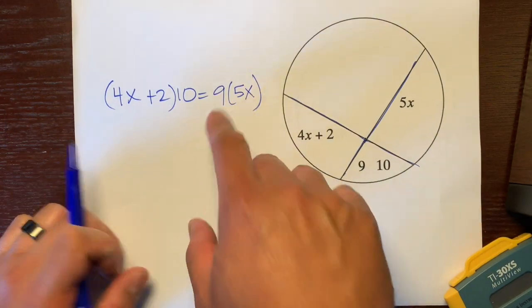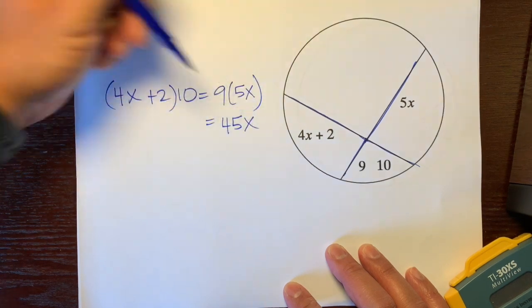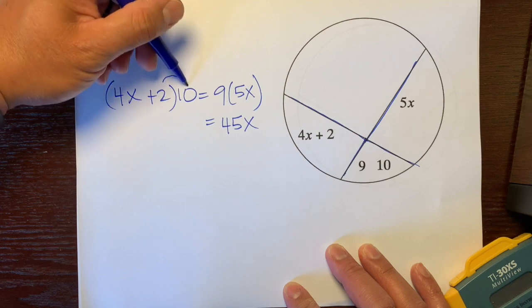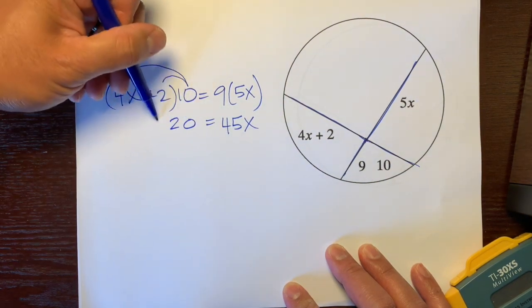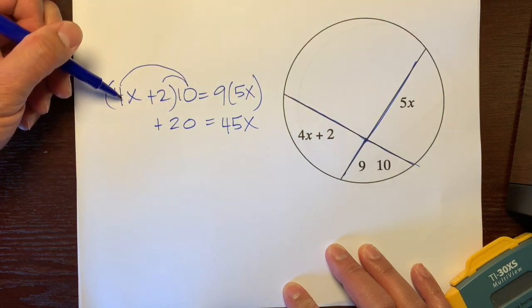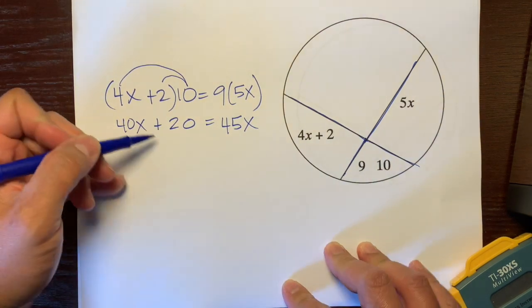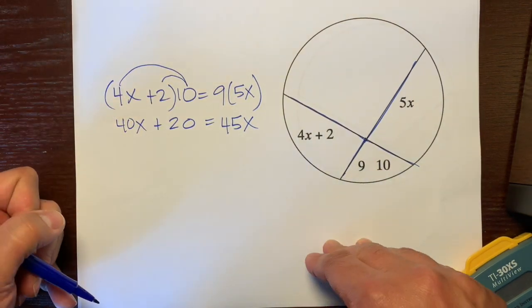We'll start on the right side. 9 times 5 is 45x. And on this side, we're going to distribute this 10 to this 2 and this 4x. 10 times 2 is 20, and then 10 times 4x is 40x. Don't forget to put the plus over there.